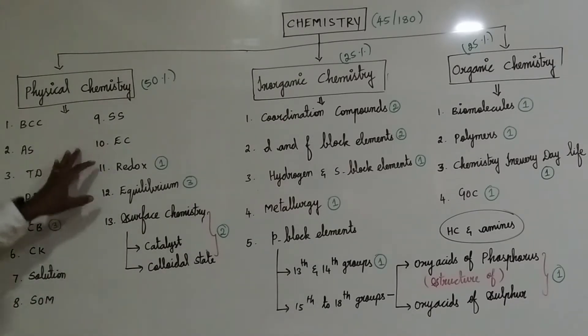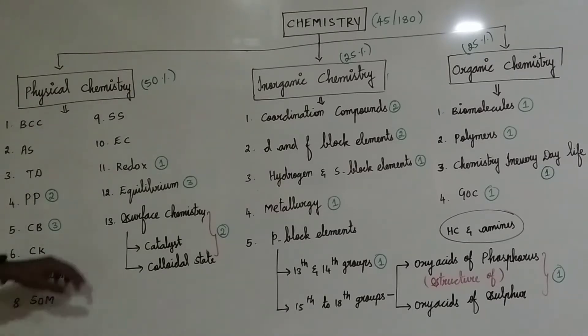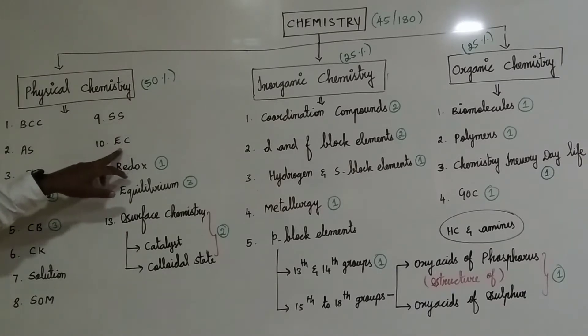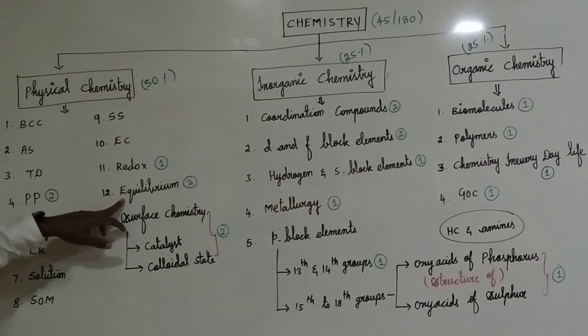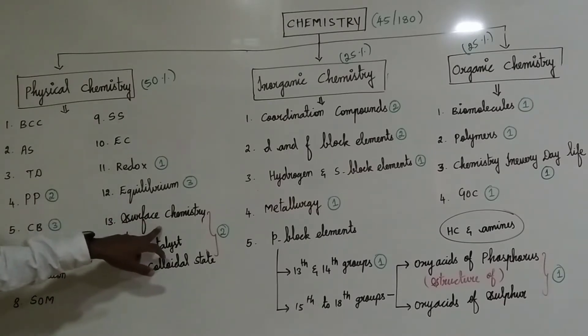So we are going to talk about physical chemistry. We are going to talk about physical chemistry, atomic structure, thermodynamics, pediatric property, chemical bonding, chemical matrix, solution, states of matter, solid state, electrochemistry, redox, ethereum, ionic equilibrium, chemical ethereum. This one is surface chemistry.